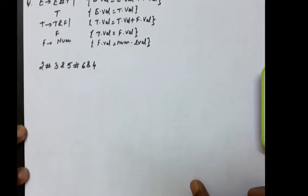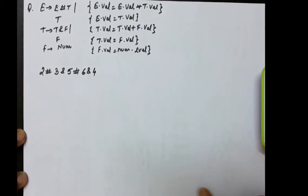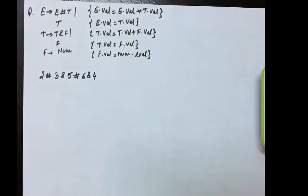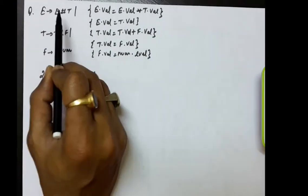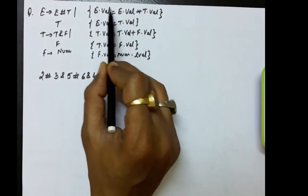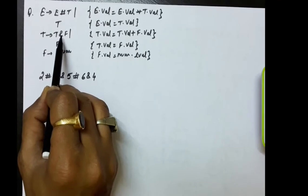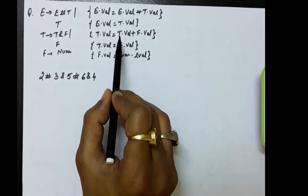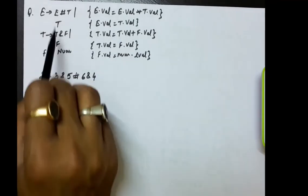Let us take some more examples to understand syntax-directed translation. There is a grammar of the kind: E produces E hash T, and T produces T hash F, and F produces number. Semantic rules are also defined with this. These are very simple semantic rules — the hash symbol is being depicted as the multiplication sign, and the 'and' symbol is actually treated as the plus sign. The rest of the productions are very simple.